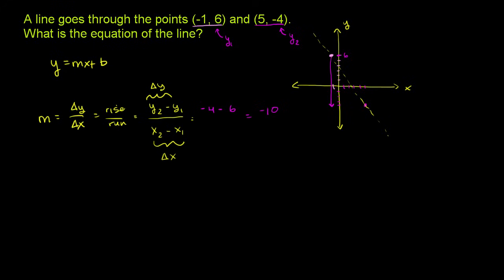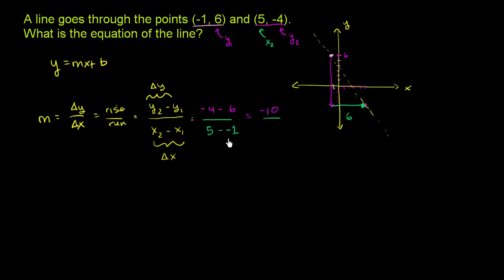Now we just have to find our change in x. We started at x equals negative 1 and go all the way to x equals 5. It takes us 1 to get to 0 and then 5 more, so our change in x is 6. Our ending x value is 5 minus our starting x value of negative 1: 5 minus negative 1 is the same as 5 plus 1, which is 6. So our slope is negative 10 over 6, which is the same thing as negative 5 over 3. We divide the numerator and denominator by 2.